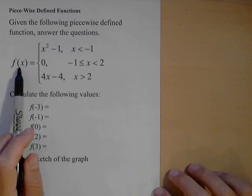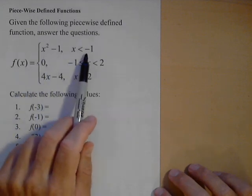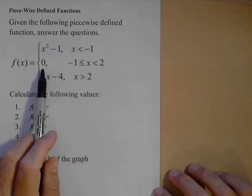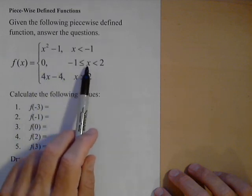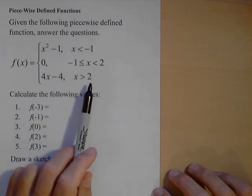So what we're reading here is that f of x is x squared minus one when x is less than negative one, it's zero when x is between negative one and two, and it's four x minus four when x is greater than two.